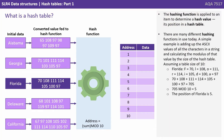A hashing function is applied to an item to determine what we hope is a unique hash value — its position in the hash table. There are many different hashing functions in use today. A very simple example is adding up the ASCII values of all the characters in a string and calculating the modulus of that value by the size of the hash table.